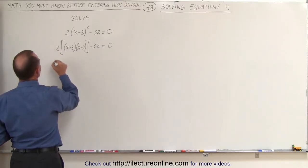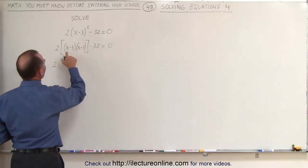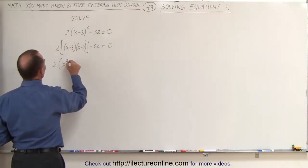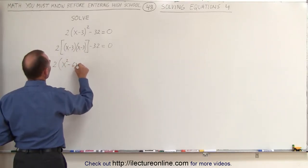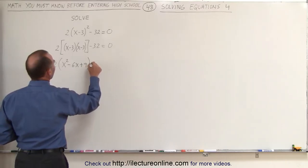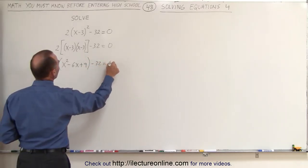So this is equal to 2 times x times x is x squared minus 3x plus minus 3x is minus 6x plus 9 minus 32 equals 0.